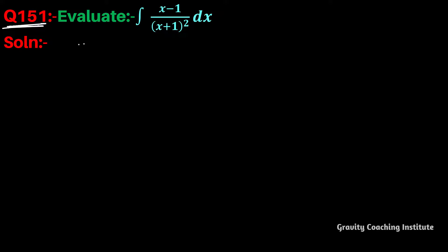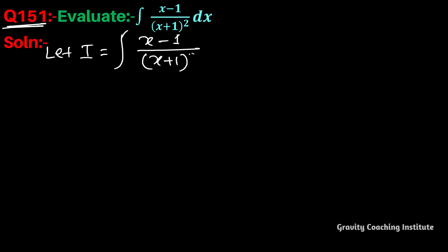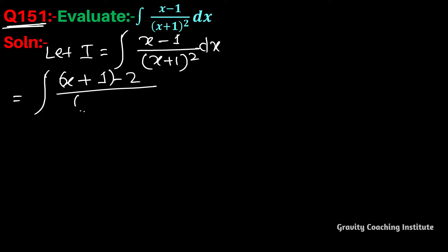Question number 151: evaluate the integration of (x minus 1) by (x plus 1) whole squared dx. Let I equal to integration of (x minus 1) upon (x plus 1) whole squared dx. We will change the numerator to (x plus 1) minus 2, by (x plus 1) whole squared dx.